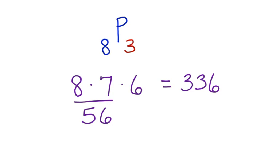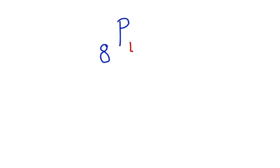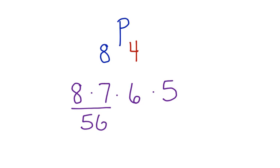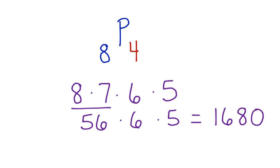Wow! There are a lot more combinations if the friends are going on three at a time — there are a lot of different ways to arrange those eight friends. What about four at a time? Let's use permutation notation again. We still have the eight friends, but this time they're going four at a time. So we have eight times seven times six times five. We know 56 times six times five equals 1,680 different combinations.